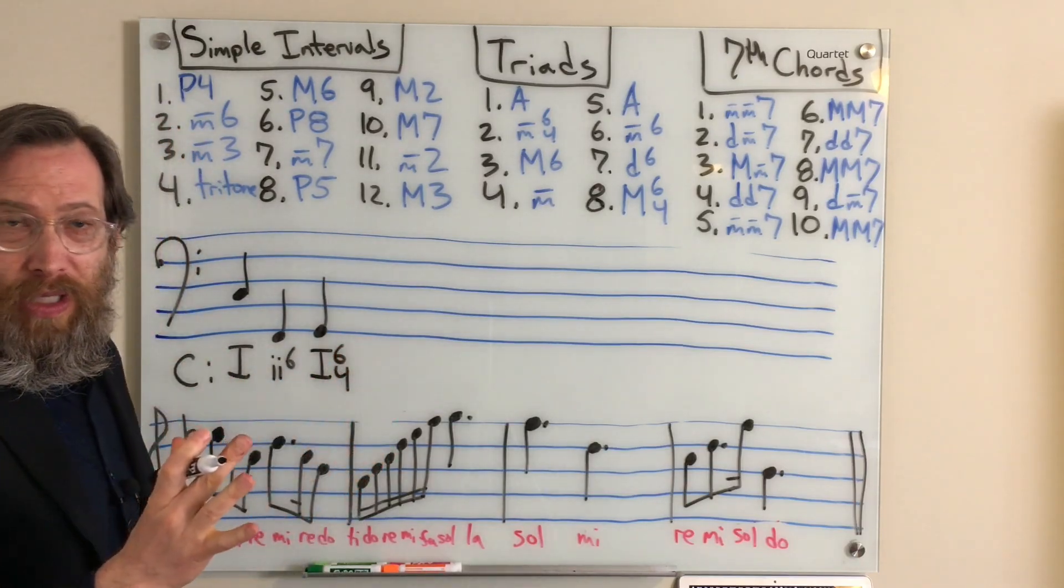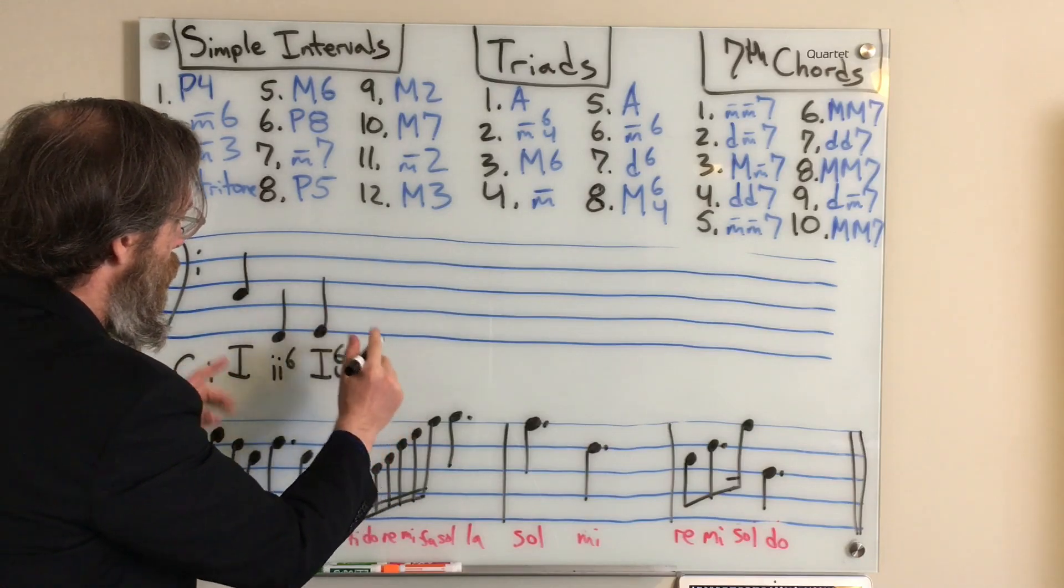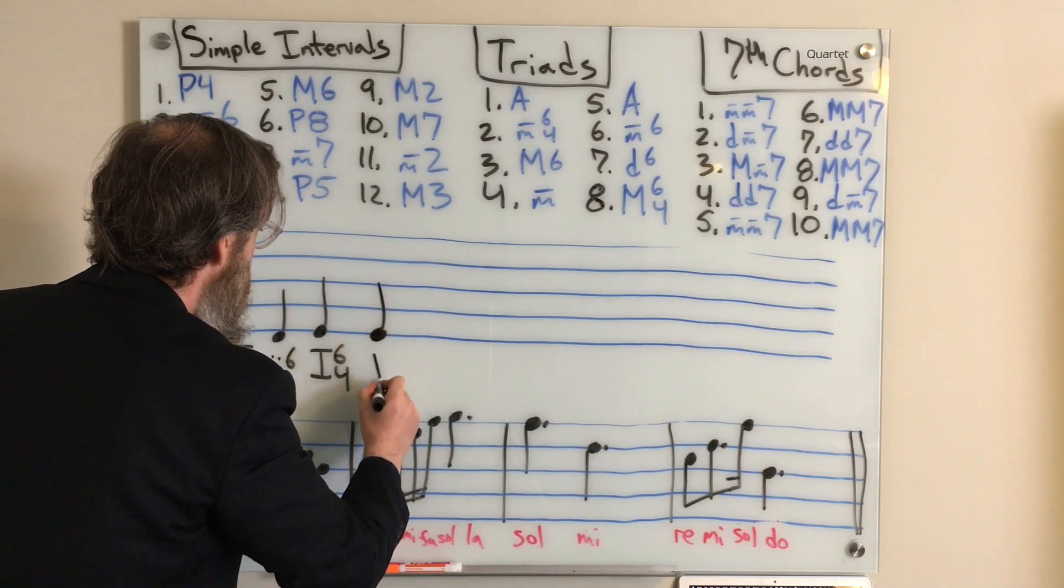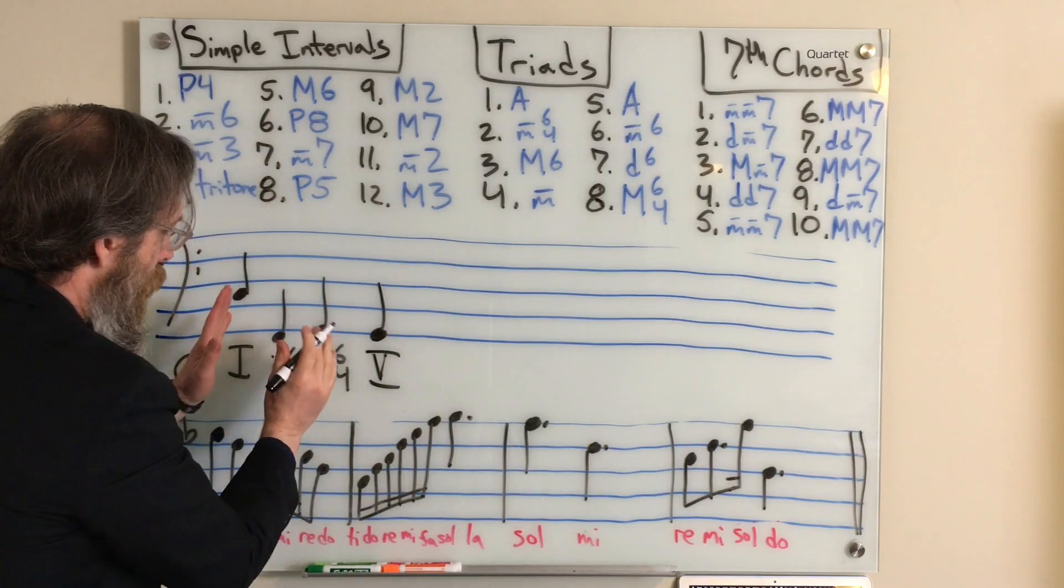Some music theory people will call this a 5-6-4, and the 6-4 is like upper neighbors that resolve to 5 in root position.